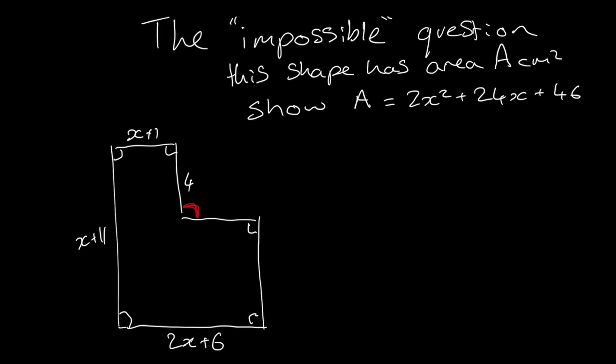There's two main methods I can see to this question. One is essentially work out a bigger shape and remove a smaller shape and the other one is you split this shape up into two. So I'm going to do the subtractive method first as I think it actually requires less work.